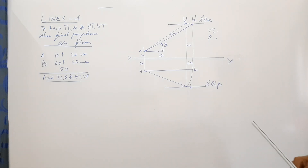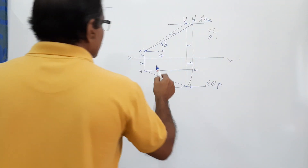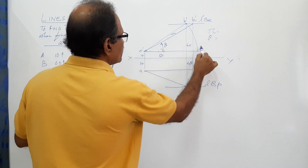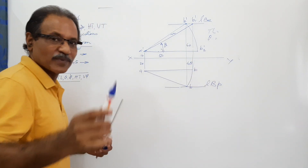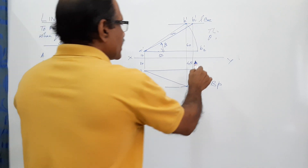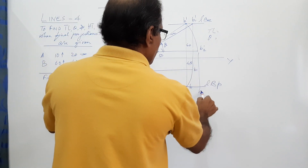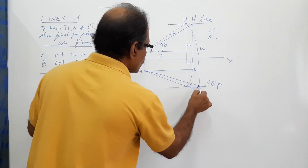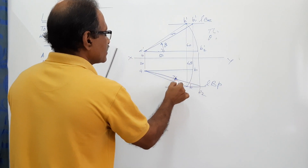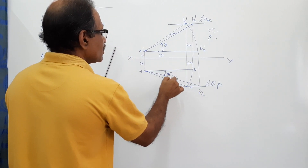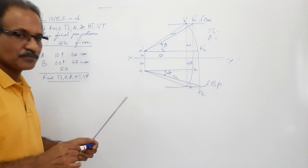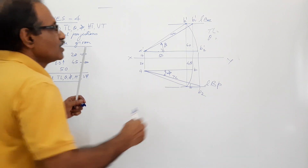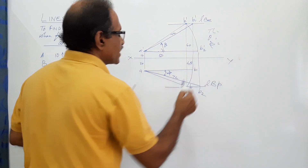Now, what do you have to do? Make the elevation parallel to XY. The elevation is a-dash b-dash. Rotate it to get b2-dash. Drop b2-dash down to get b2. What is AB2? AB2 is the true length and this angle is phi. So you can find phi as well.